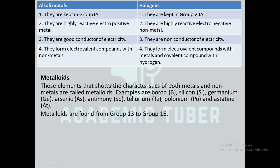Metalloids: those elements that show the characteristics of both metals and non-metals are called metalloids. Examples are boron, silicon, germanium, arsenic, antimony, tellurium, polonium, and astatine. Metalloids are found from group 13 to group 16.